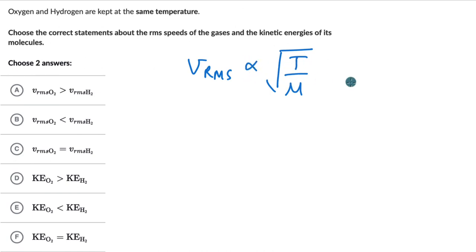And when you remove the proportionality, you add a constant of 3R, but it's proportional to T by M, the square root of T by M. So if both of them are kept at the same temperature, T is same for oxygen and hydrogen.